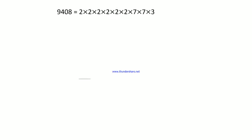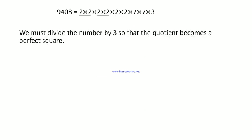Let's make the pairs of these prime factors. We observe that prime factor 3 does not form a pair. Therefore, we must divide the number by 3 so that the quotient becomes a perfect square. So, dividing 9408 by 3, we get 3136.